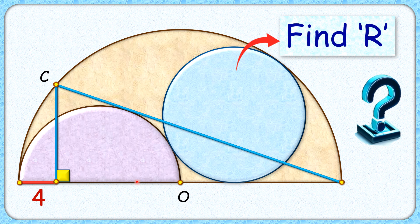Welcome everyone. In this interesting question we have a semicircle and a circle inside this big brown semicircle with center O. From one end of the diameter of the brown semicircle, a tangent is drawn to this purple semicircle, meeting the brown circle at point C. From point C a perpendicular is dropped down and the length of this red line segment is given as 4 cm. With this limited data we have to find the radius of this blue circle.